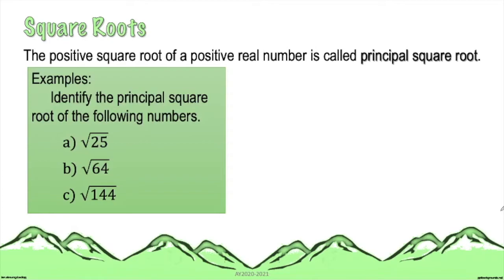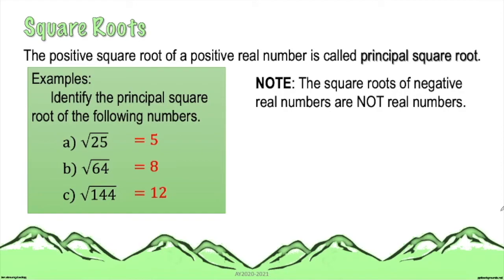For example, we are to identify the principal square root of the following numbers. The square root of 25 would be equal to positive 5, square root of 64 would be equal to positive 8, and square root of 144 is equal to positive 12.